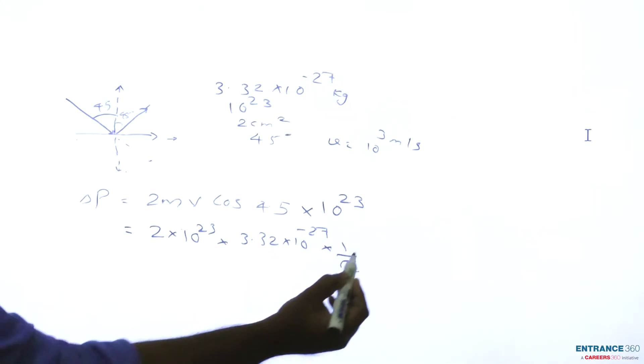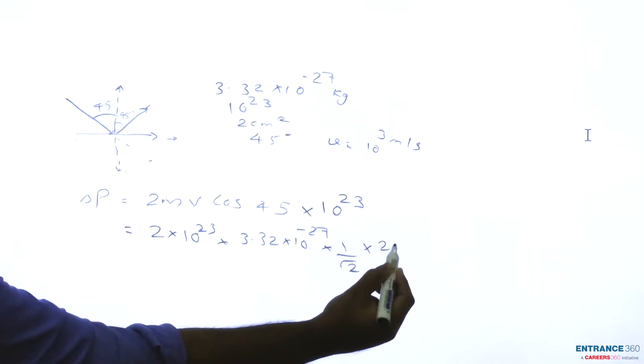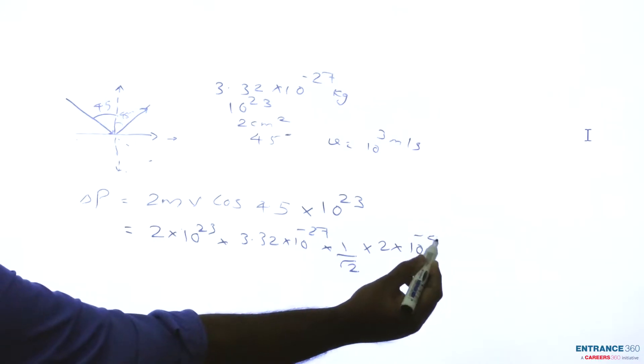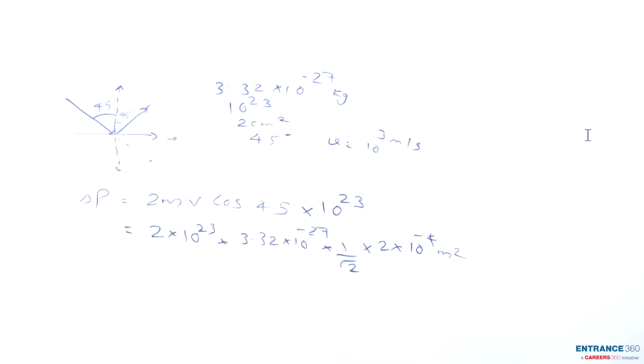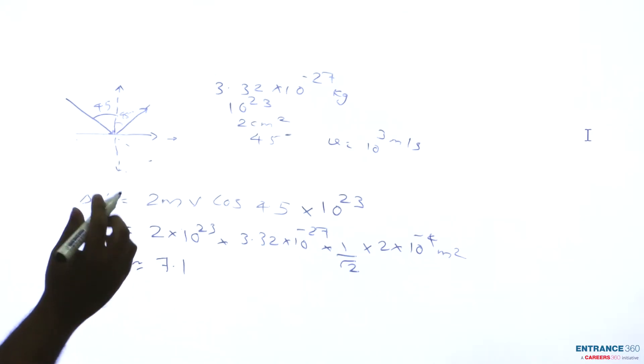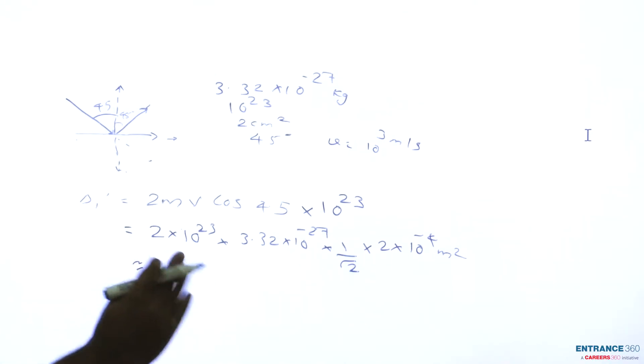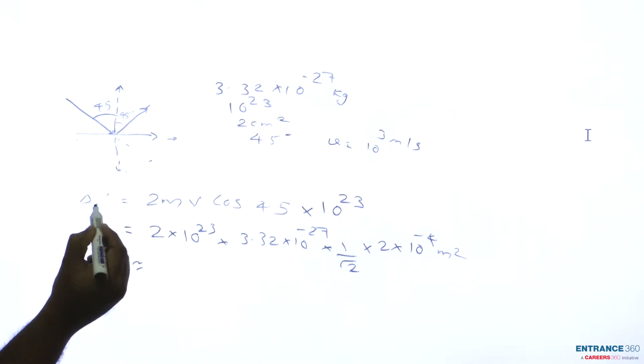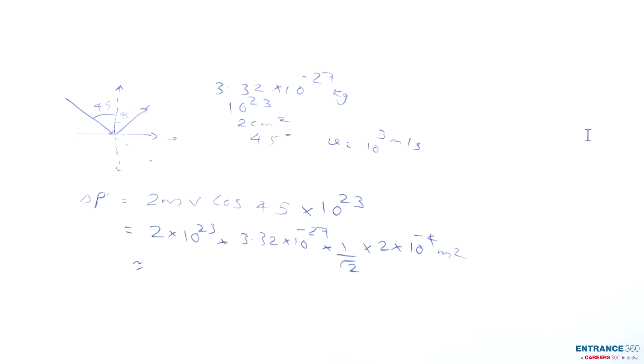Velocity is 10^3 meters per second, area is 2 cm² which is 2 × 10^-4 square meters. Upon calculation we get approximately 7.1 as the value of change in momentum.